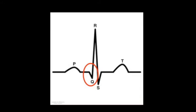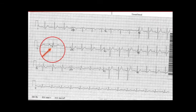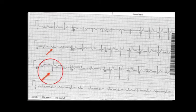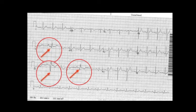If we see Q waves in contiguous leads, that is diagnostic of an old MI. Let's take a look at this EKG. This is an 82-year-old male who presented with chest pain. He states he had a similar episode several years ago, but never came to the hospital. Here we see a Q wave in lead 2, a Q wave in lead 3, and a Q wave in lead AVF. This is an example of an old inferior wall MI.